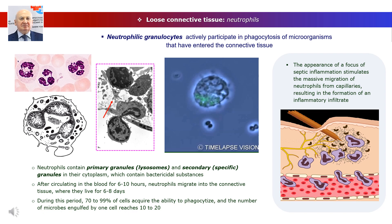The appearance of a focus of septic inflammation stimulates the massive migration of neutrophils from capillaries, resulting in the formation of an inflammatory infiltrate. Neutrophils in the area of damage provide phagocytosis of bacteria and wound cleansing. Some neutrophils disintegrate, releasing a large amount of lysosomal enzymes and bactericidal factors into the focus of inflammation. The accumulation of dead neutrophils, decay products of microorganisms, and damaged tissues manifests as the formation of pus, which either drains from the wound or is absorbed by dressing materials.